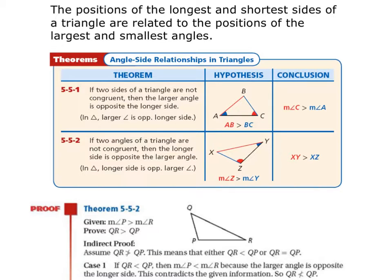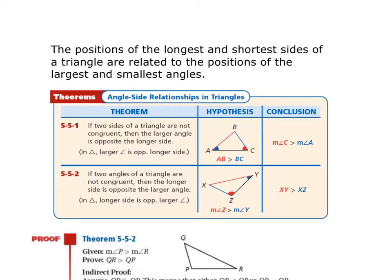Next we talked about the order of angles and sides and how they compare to each other. The theorems say that the positions of the longest and shortest sides of a triangle are related to the positions of the largest and smallest angles. Theorem 5-5-1 says that if two sides of a triangle are not congruent, then the larger angle is opposite the longer side.